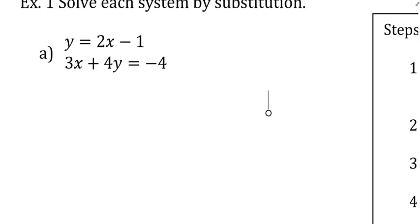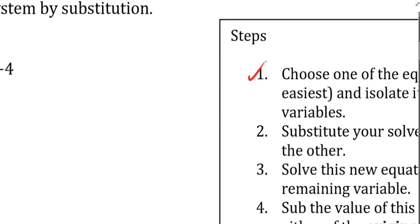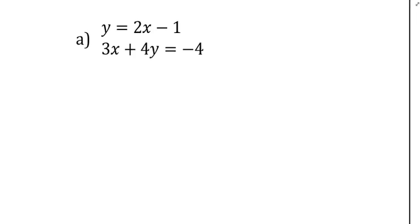Okay, so today, this step number one is actually going to be done for us, so we don't have to worry about it. It is important to realize that this one is already isolated for y. It says y equals. The other one isn't isolated because the 3x and the 4y are on the same side, and it's 3x, not x.